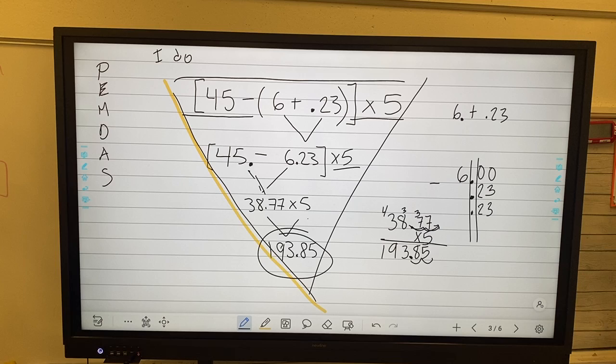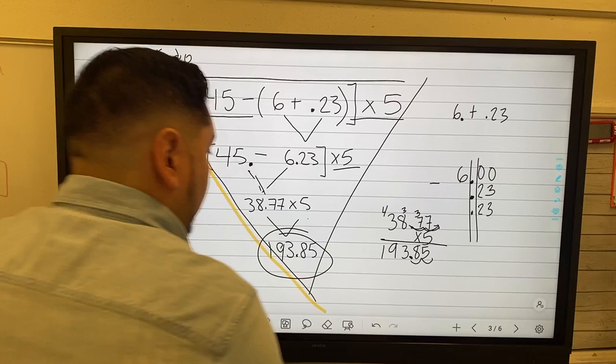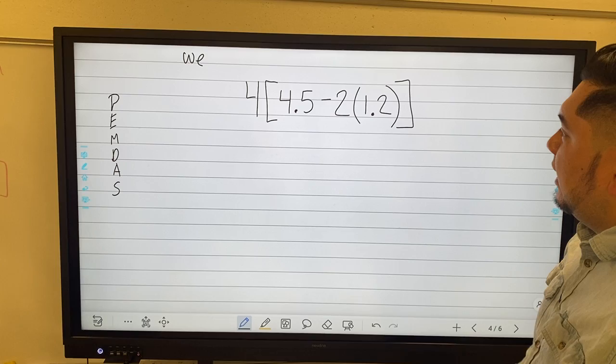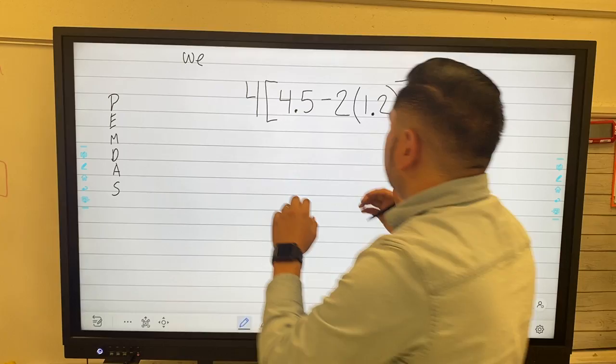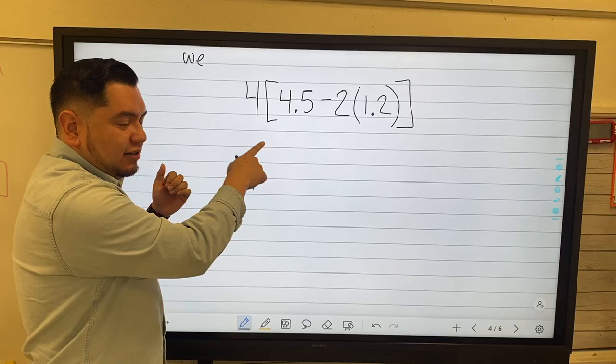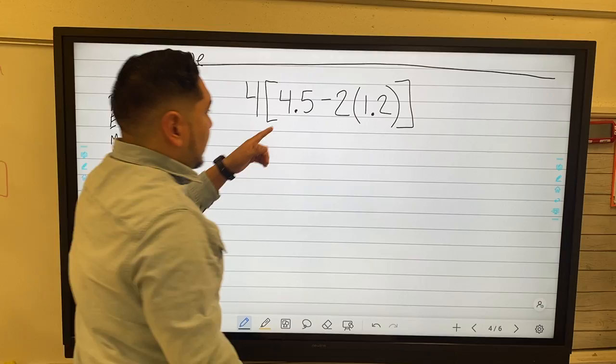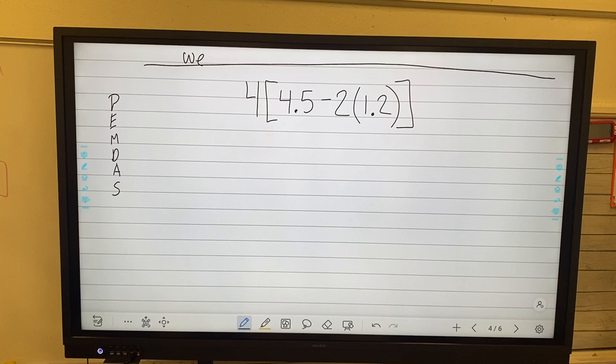Awesome, well I was going to do another problem with you guys. This is much more simpler. Let's do it, we got time. Now again, PEMDAS—just take a second to write this, draw a line to separate the work you just did from this one, and then write this on one line of your paper quickly please. You have about 15 seconds.